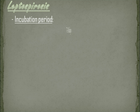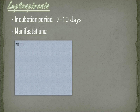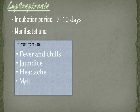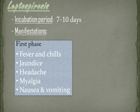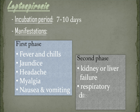Incubation period. According to DOH, it is 7 to 10 days. Manifestations. Leptospirosis may occur in two phases. During the first phase, the patient may experience fever and chills, jaundice, headache, myalgia, and nausea and vomiting. The patient may recover for a time but may become ill again. In the second phase, it is more severe and can lead to kidney or liver failure, respiratory distress, and meningitis.